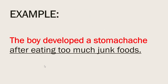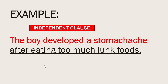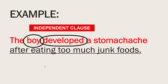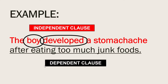For example, in the sentence: 'The boy developed a stomach ache after eating too much junk food.' The clause 'The boy developed a stomach ache' is the independent clause. It has a subject — 'the boy' — and a verb — 'developed.' This clause can stand on its own and has a complete thought. The clause 'after eating too much junk food' cannot stand on its own, for its thought is not complete.